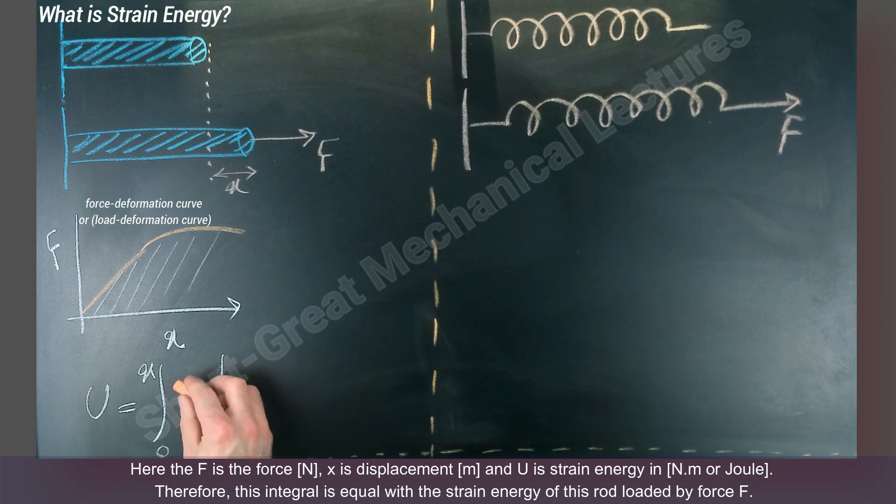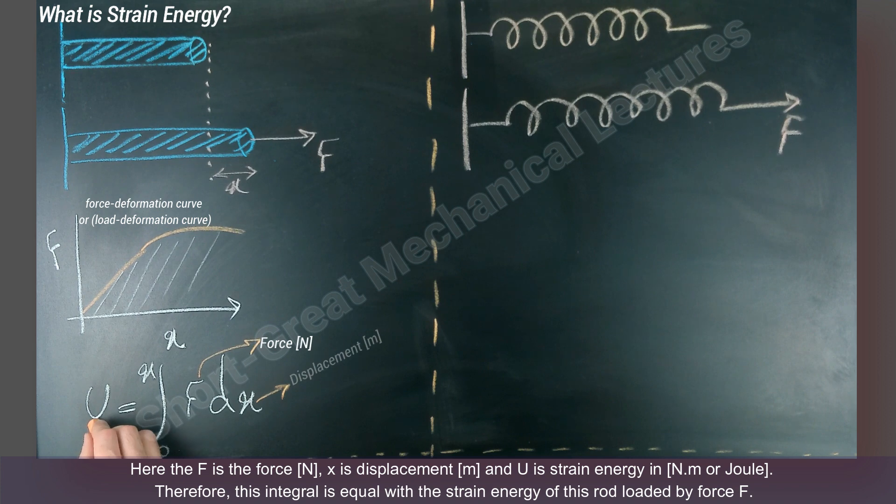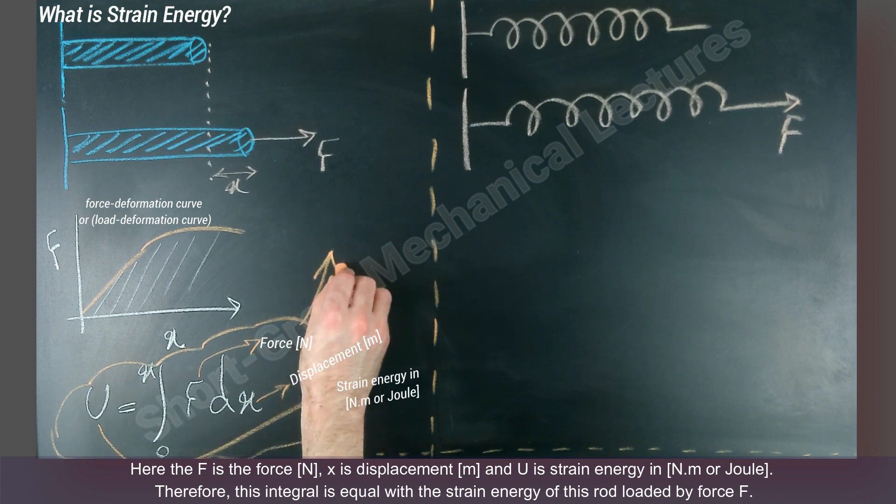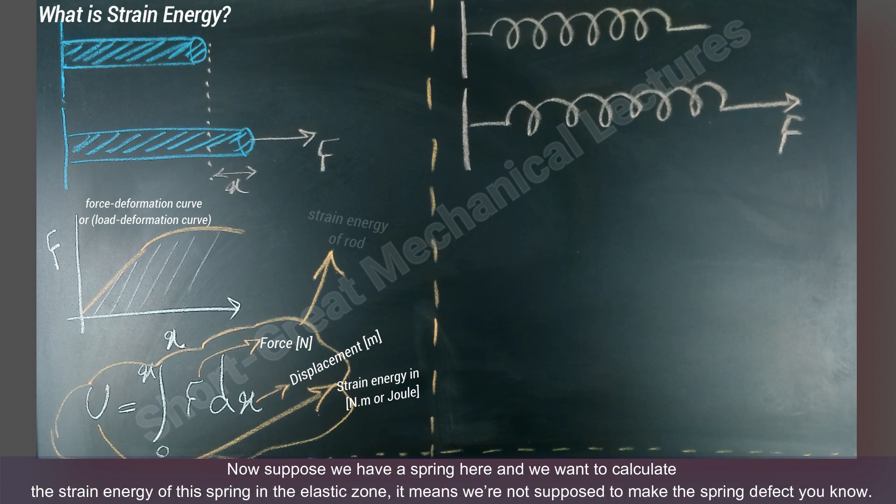Here the F is the force in Newton, x is displacement in meter, and U is strain energy in Newton meter or joule. Therefore, this integral is equal with the strain energy of this rod loaded by force F.